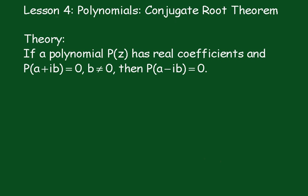Theory: If a polynomial P(z) has real coefficients and P(a + ib) = 0, b ≠ 0, then P(a - ib), the conjugate of a + ib, is also equal to 0.